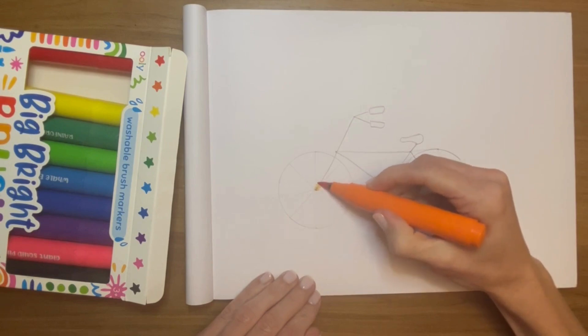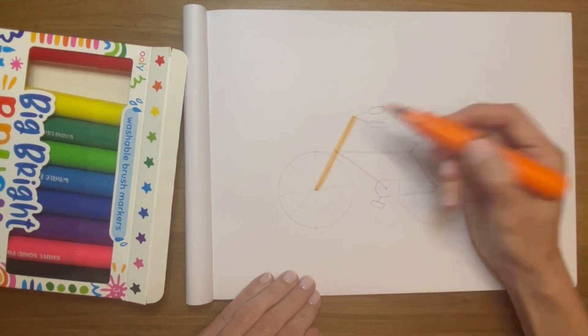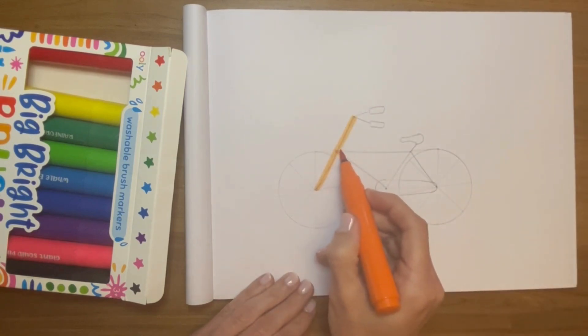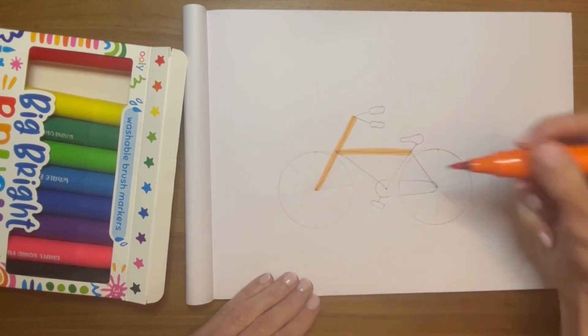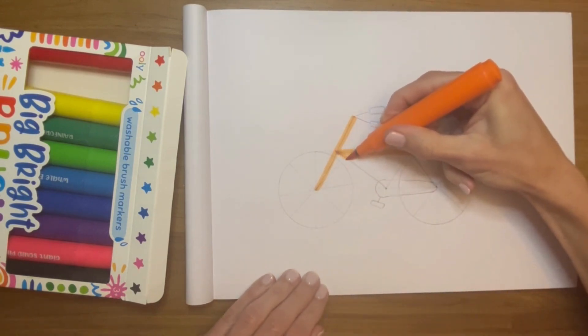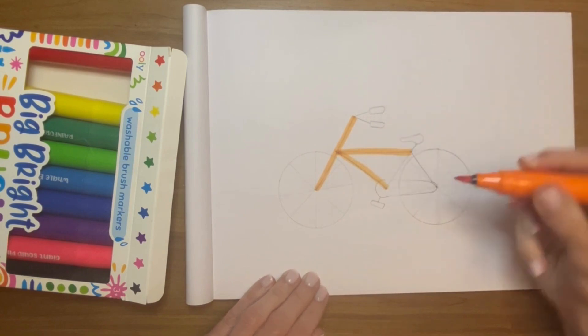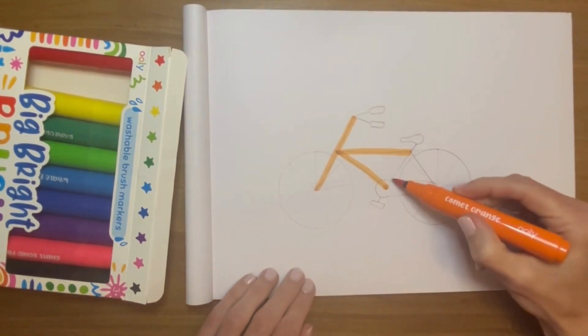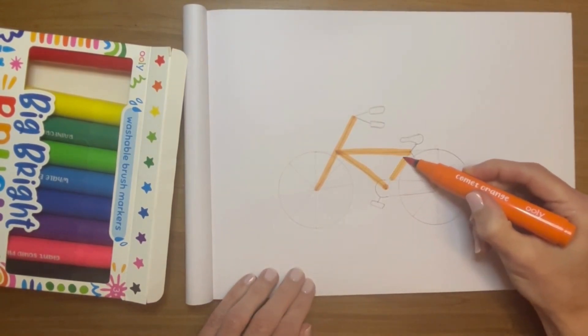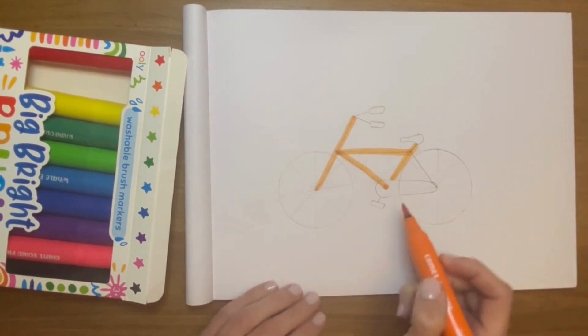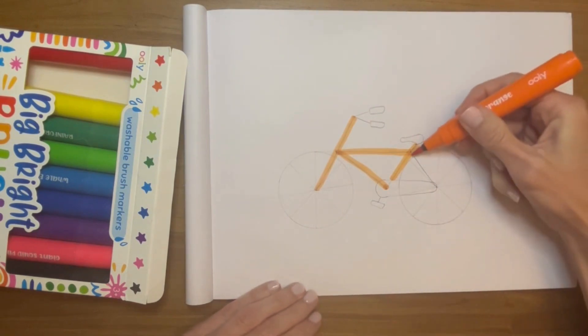So now we're going to color the frame of the bike. What you do is you incline your marker a little bit—so I made a small mistake there, it doesn't matter—so it's a little thicker. All right.